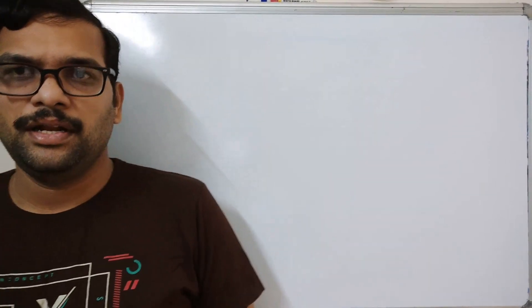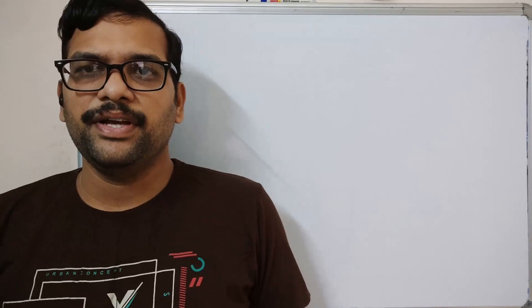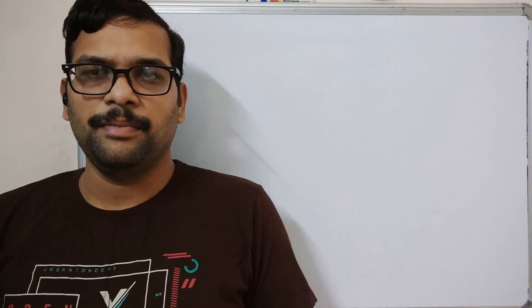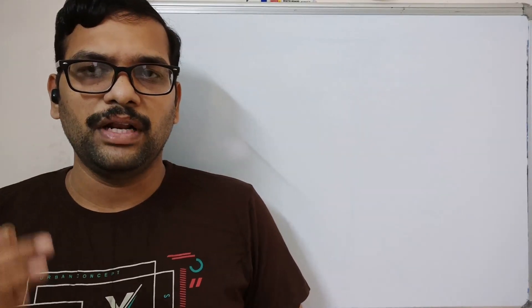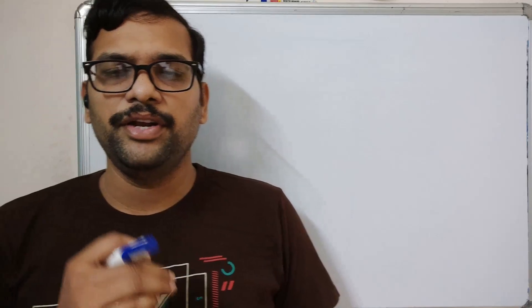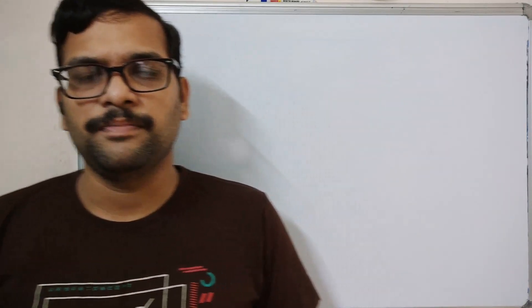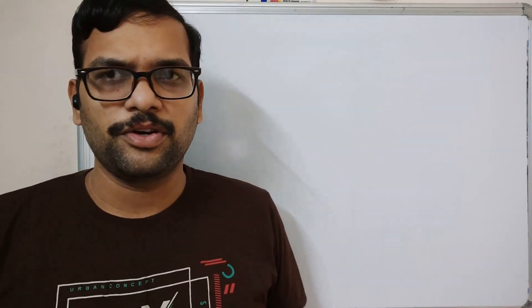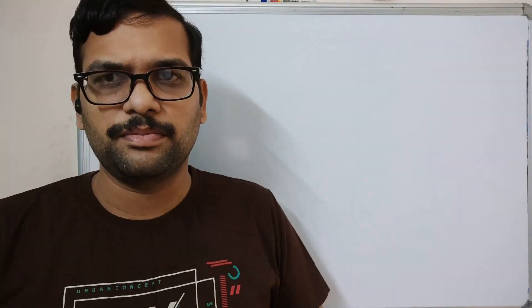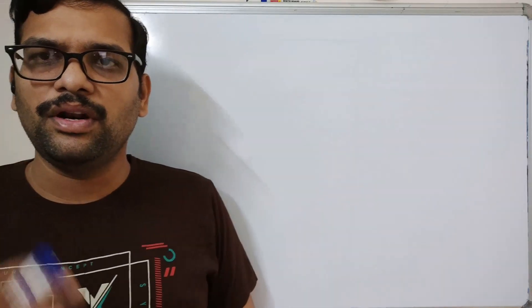Hello friends, welcome back to our channel. In the previous session we were discussing the simplification of context-free grammar. To simplify a context-free grammar we need to remove useless productions, null productions, and unit productions. In the previous session we saw how to remove useless productions, and in today's session we will see how to remove epsilon productions.